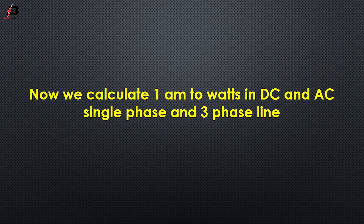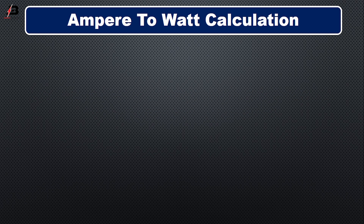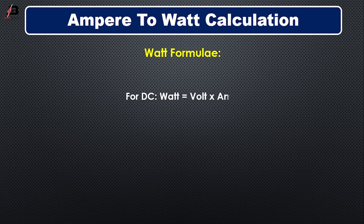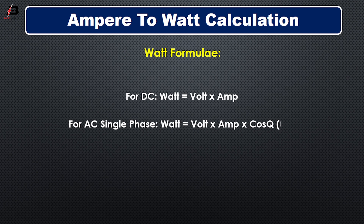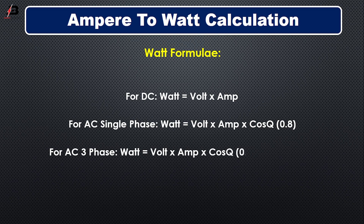Now we calculate 1 ampere to watt in DC and AC single phase and 3-phase line. The watt formulas are: For DC — watt equals volt multiplied by ampere. For AC single phase — watt equals volt multiplied by ampere multiplied by cos theta, meaning power factor 0.8. For AC 3-phase — watt equals voltage multiplied by ampere multiplied by cos theta, meaning power factor, multiplied by root 3.